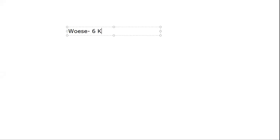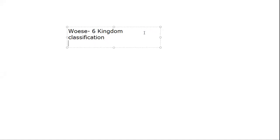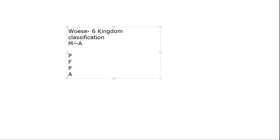Woese was a scientist who gave six kingdom classification. He divided Monera into Archaebacteria and Eubacteria. Eubacteria are the present-day bacteria, and Archaebacteria are the oldest found bacteria. Archaebacteria do not live in normal conditions. We will study this in detail in the Monera kingdom. The most acceptable classification is the five-kingdom system proposed by Whittaker — Monera, Protista, Fungi, Plantae, and Animalia.